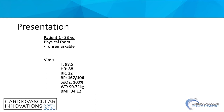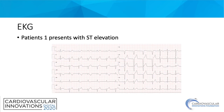In terms of physical exam for patient 1, we see that it's unremarkable — we saw nothing particularly concerning. With vitals, patient 1 did, however, have an elevated systolic and diastolic blood pressure. With EKG, we saw that patient 1 presented with ST elevation, which is indicative of myocardial infarction.